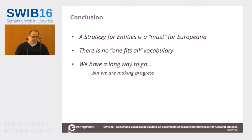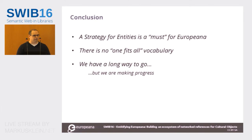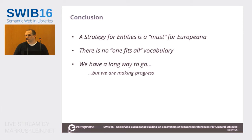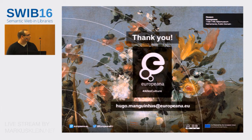In conclusion, we started a strategy for entities — this was missing and is really a must for Europeana. There is no one-fits-all vocabulary; you will need to look at many vocabularies, not just Wikidata, not just VIAF, but others too. We still have a long way to go, but hopefully we are making progress and we are taking on a lot of things that we hope will be developed in other projects. Thank you.